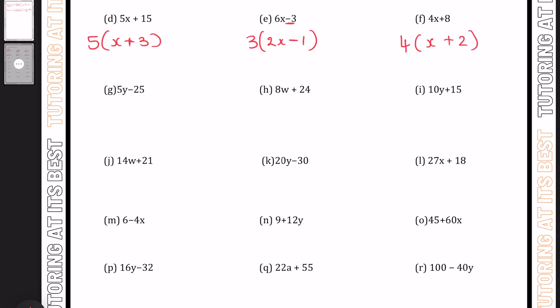Moving to G: we can see 5 is the highest common factor. 5 times y is 5y, and 5 times minus y gives us minus 25, so 5(y − 5). Let's go for H. What's common between 8 and 24? The highest is going to be 8, giving us 8(w + 3).